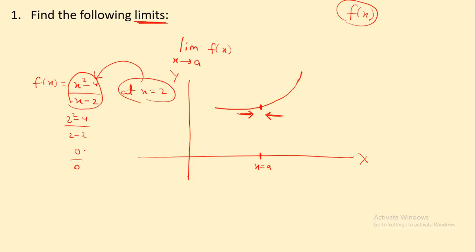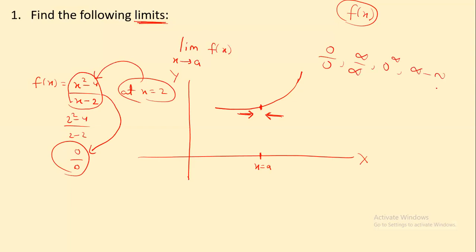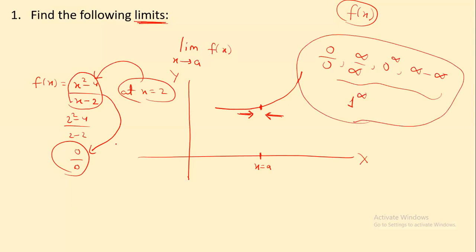You cannot get the value directly when you have 0/0, or ∞/∞, or 0·∞, or ∞ - ∞, or 1^∞ — these are all indeterminate forms. So you need to know about methods such as factorization, common factor, formula, and rationalization to resolve them.